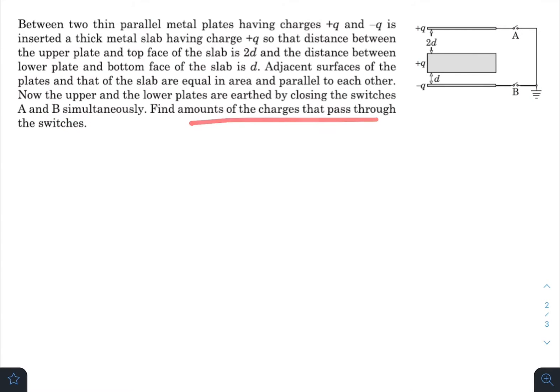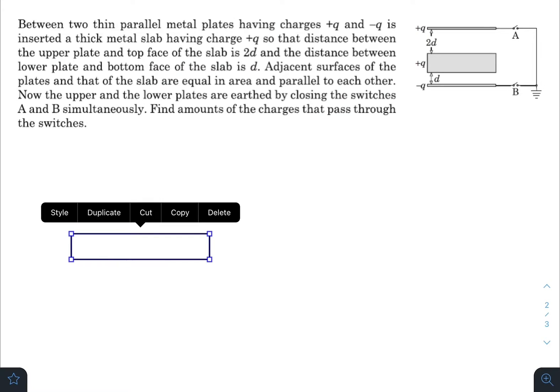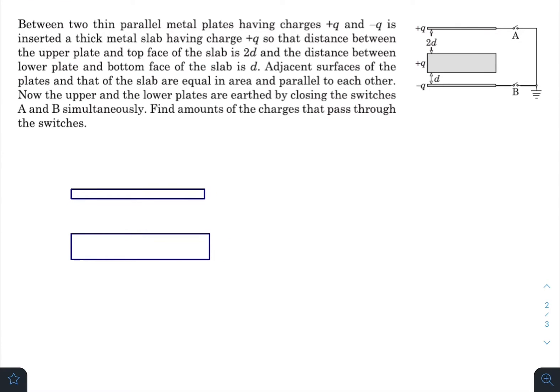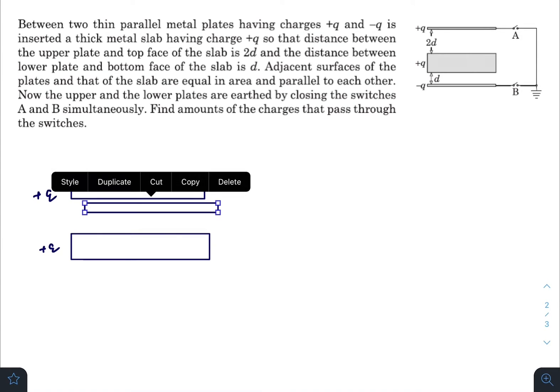Let us draw the diagram quickly. So this is the metallic slab and this one is our upper plate carrying a charge plus q, and similar kind of plate at a distance 2d minus q.